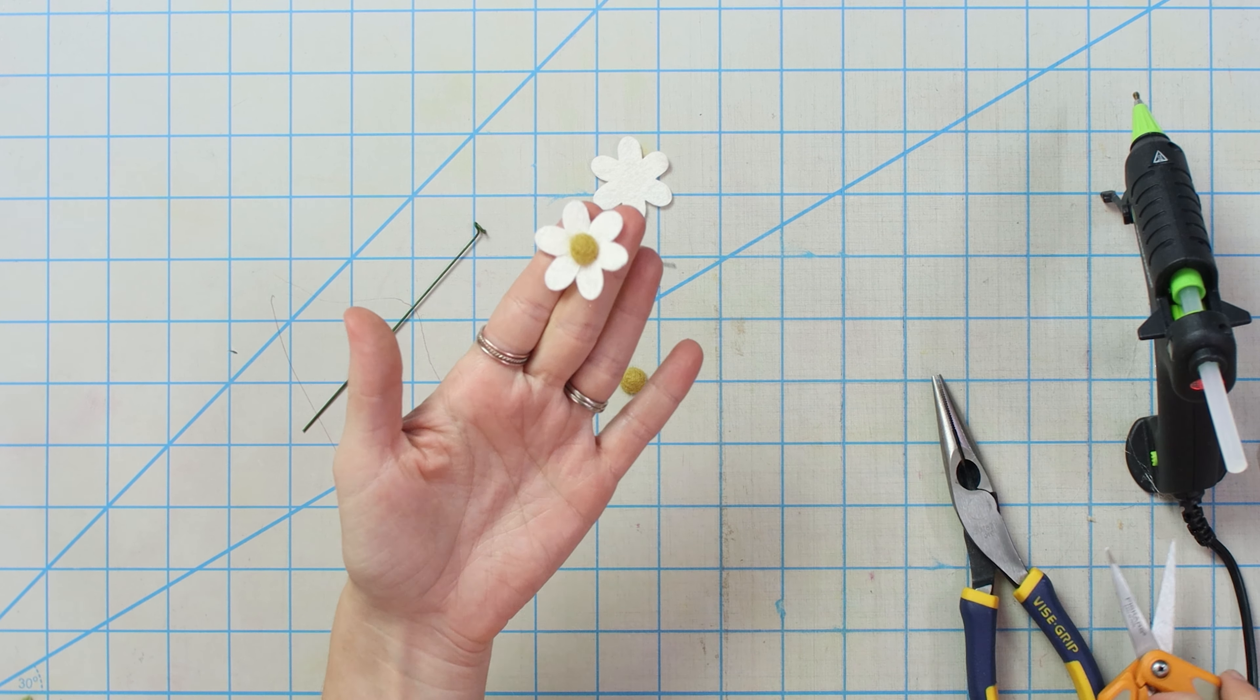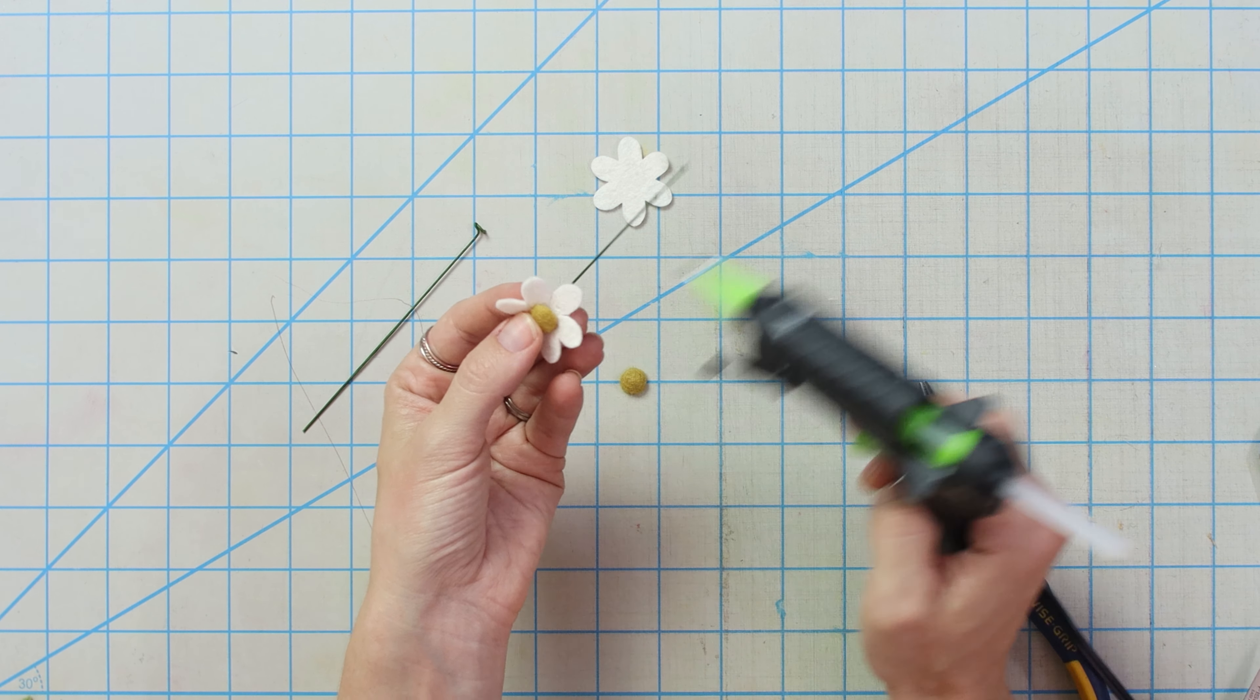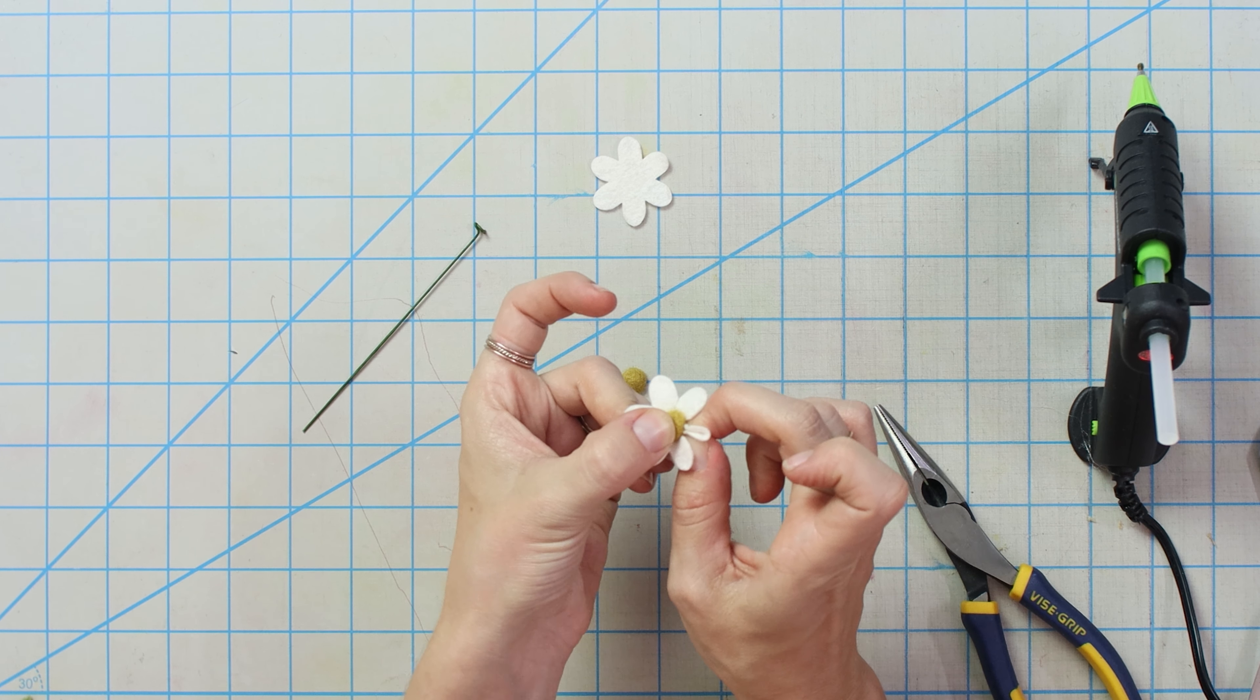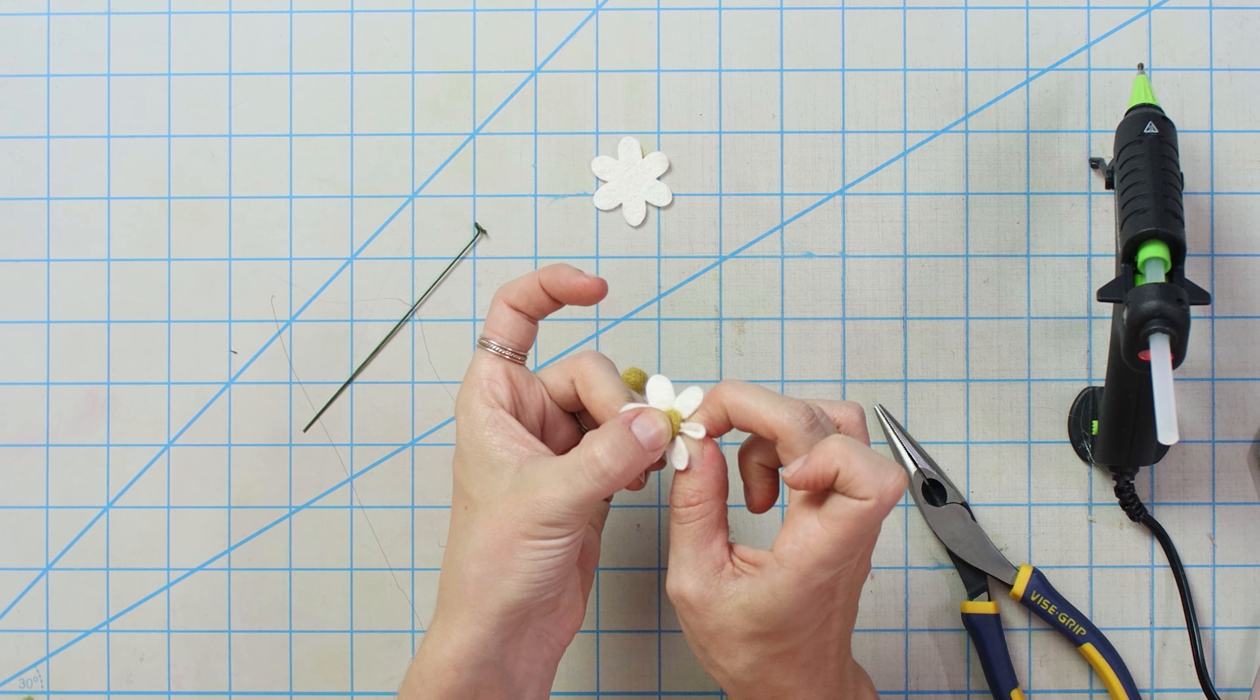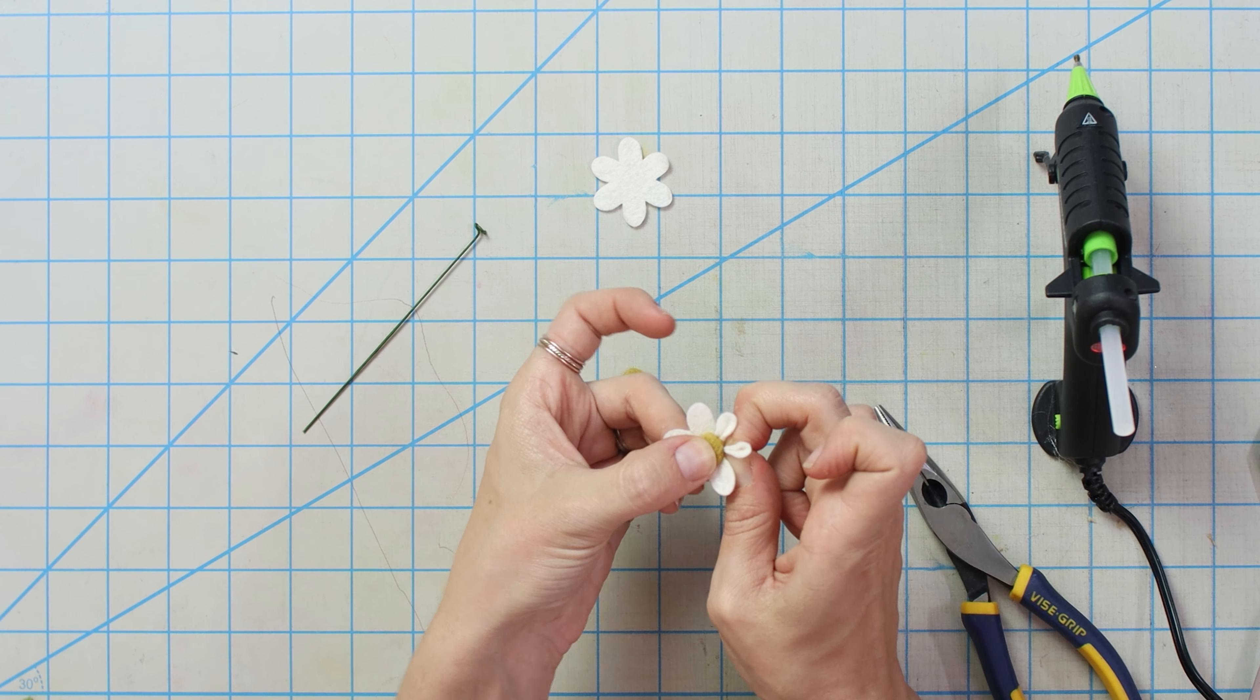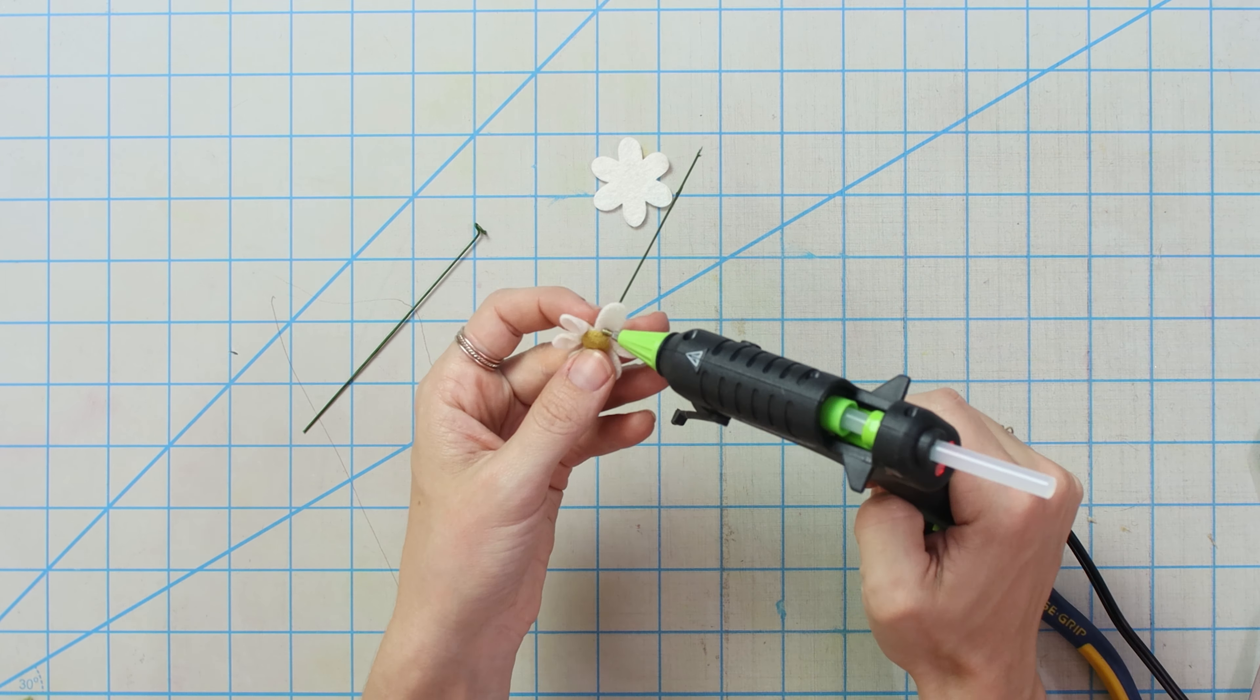We're going to cut each little valley on our petals all the way to the middle. And then add a little bit of glue right at the base of the petal. Pinch and hold until our glue dries and sets. And then we're going to do the same thing all the way around to each one of our petals.